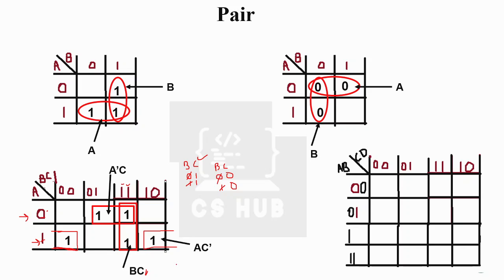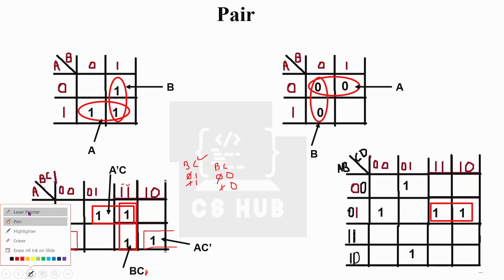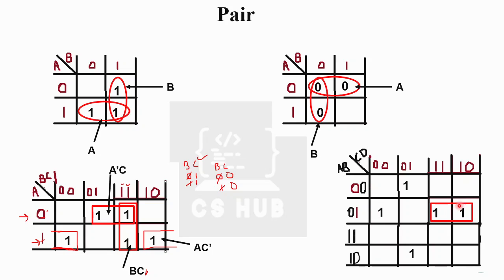For the four-variable Kmap with pairs, consider the folding property. When we fold, the leftmost cells become adjacent to rightmost cells, and topmost cells become adjacent to bottommost cells. So certain isolated ones become adjacent using this property, allowing us to form pairs. For example, one cell is adjacent to another in the same row when folded top-down.